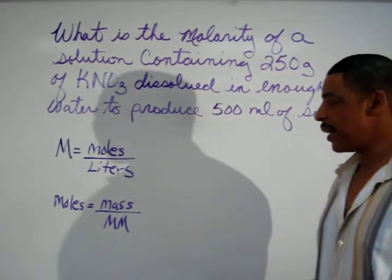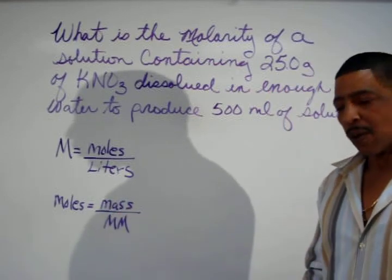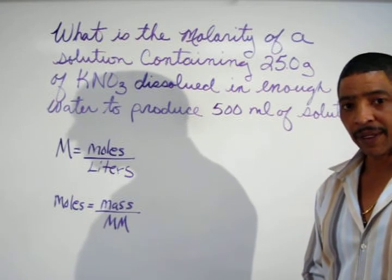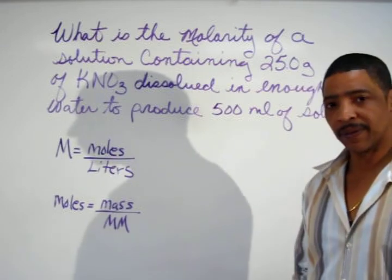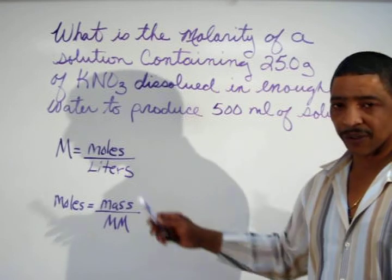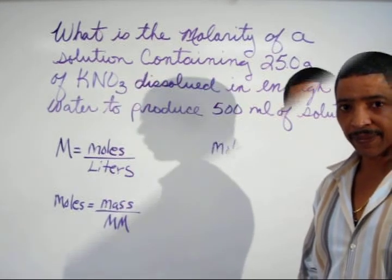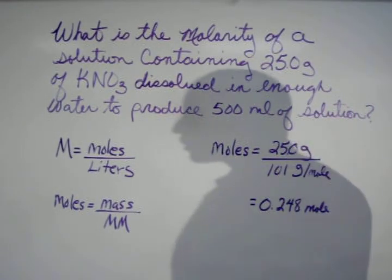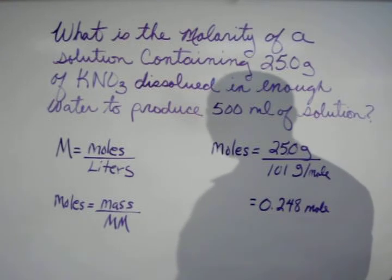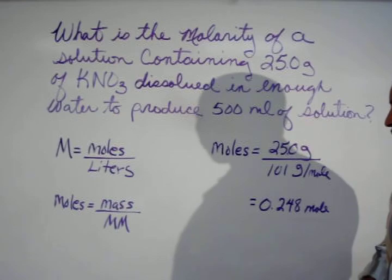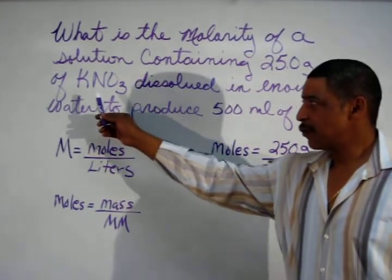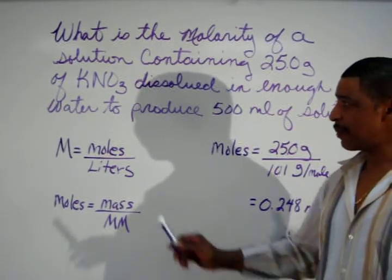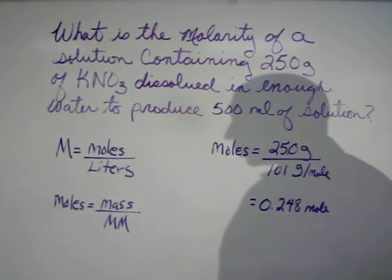At this point, write the formula for calculating moles, where moles are equal to the given mass divided by the molar mass of the compound, and molarity is equal to the given moles divided by the liters of solution. Using the mole calculation first, simply input the data from the practice problem, where 25 grams of potassium nitrate is given. From the formula for potassium nitrate, the molar mass may also be calculated, where the molar mass of potassium nitrate is 101 grams per mole.